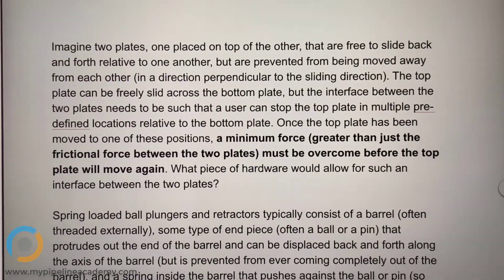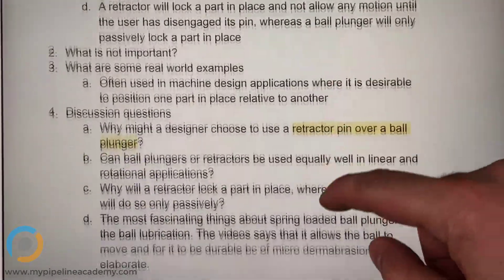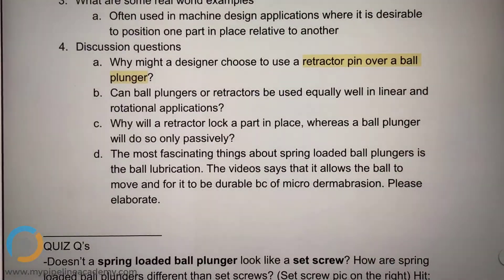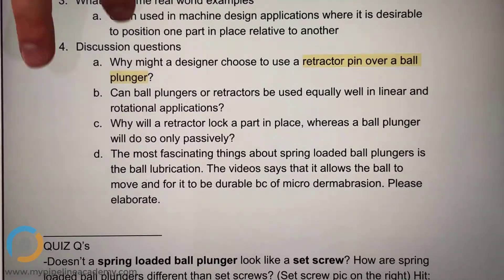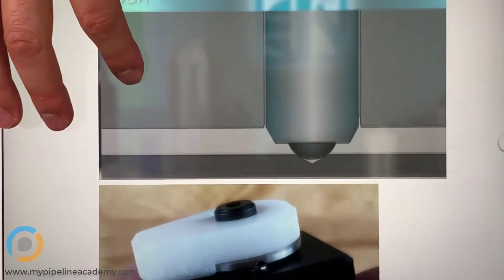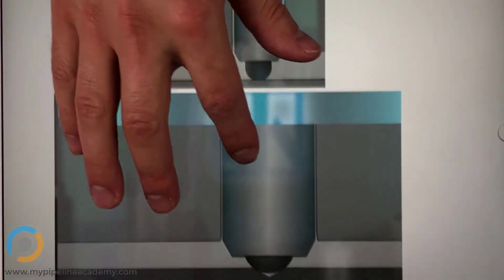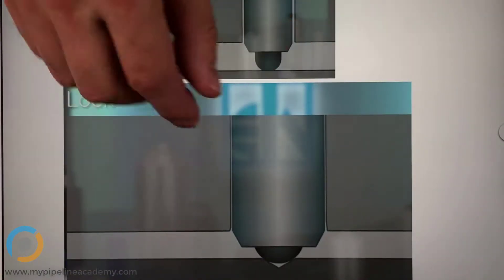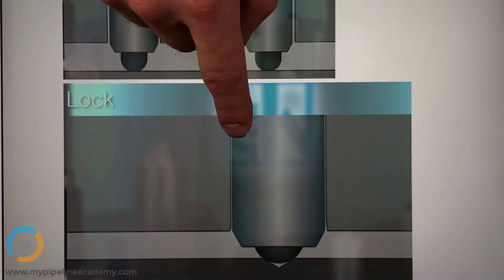So now we can visualize it. Alright, so let's go down to our discussion questions. Before we get started, my question is, I thought this lesson was about these. And what are these called? They're called ball plungers.